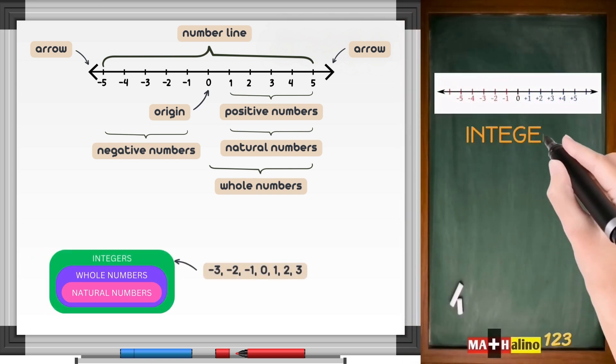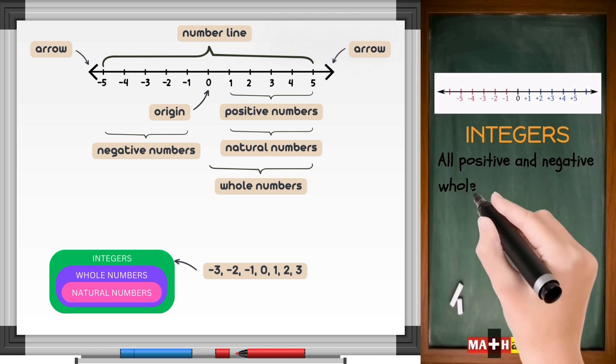Integers. All positive and negative whole numbers including zero.